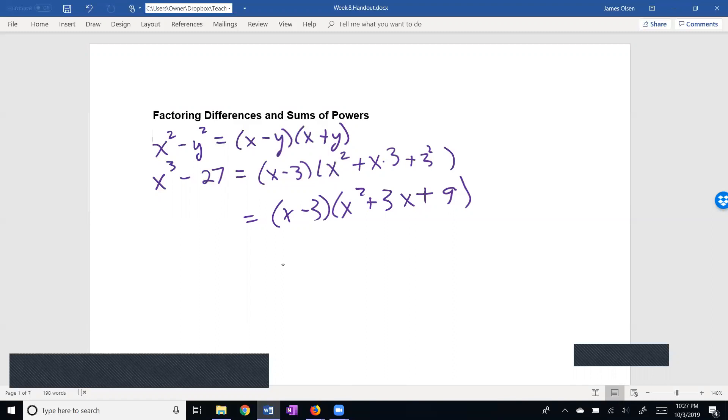Let's say we have y to the sixth minus t to the sixth. This is going to be y minus t.